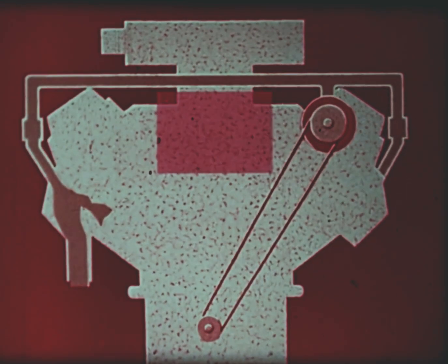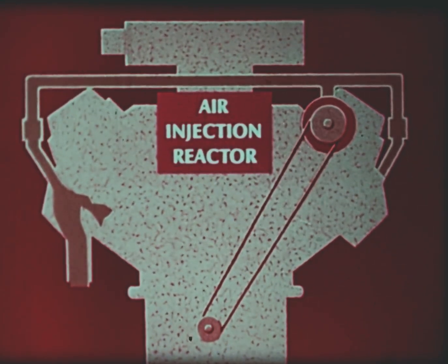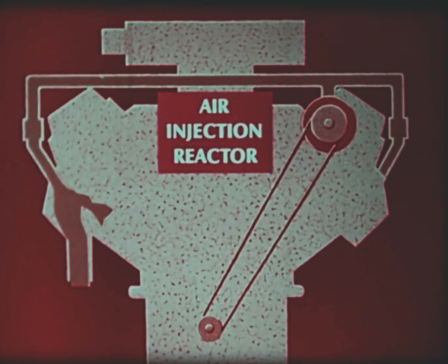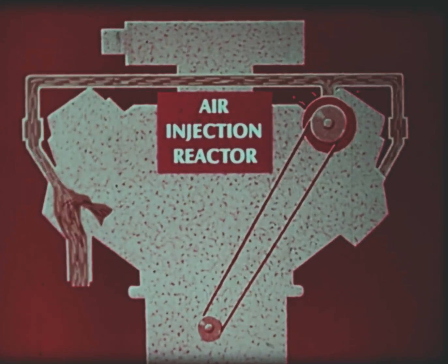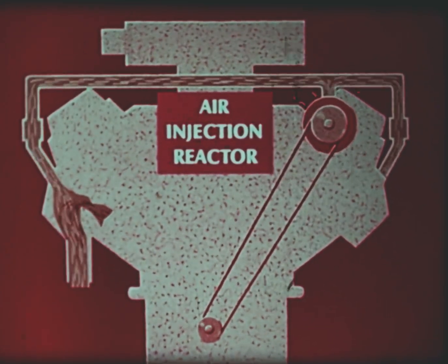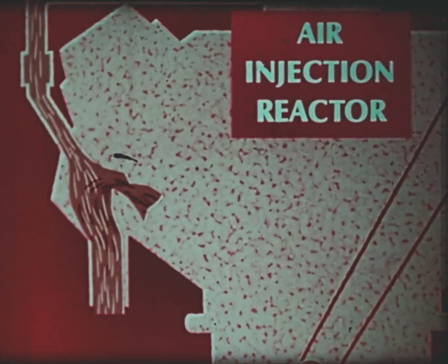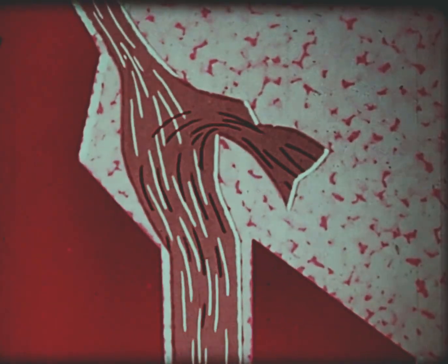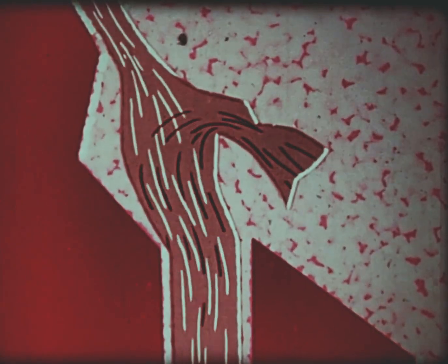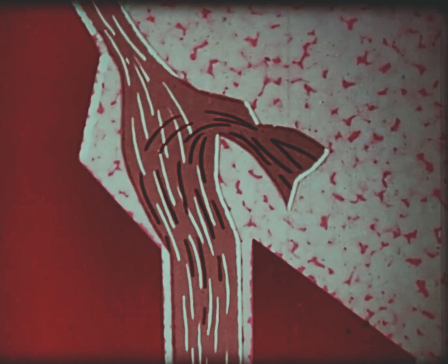Another system, called the air injection reactor, is a sort of exhaust afterburner. An air pump, belt driven by the engine, forces a stream of air into the exhaust manifold near each exhaust valve. This extra supply of air causes most of the unburned hydrocarbons to be burned before they reach the tailpipe.